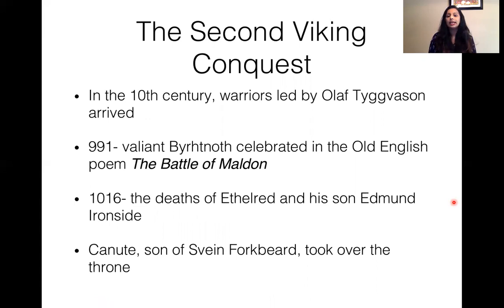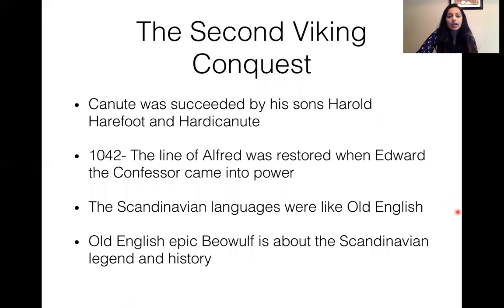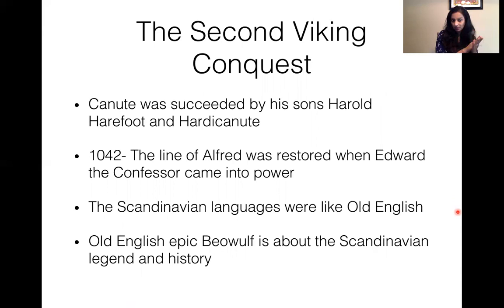The second Viking conquest came in the 10th century, led by Olaf Tryggvason. In 991, there was the Battle of Maldon, celebrated in an Old English poem. In 1016, Ethelred and his son Edmund Ironside died, and Canute — son of Sweyn Forkbeard — took over the throne. Canute was succeeded by his sons Harold Harefoot and Harthacnut. In 1042, the line of Alfred was restored when Edward the Confessor came to power.